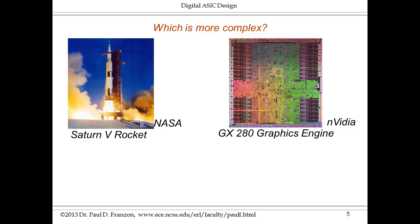How do you measure complexity? Let's try the number of parts in the system. The Saturn V rocket has 350,000 parts. The chip on the right has over a billion parts. Admittedly, there are more unique parts in the Saturn V rocket, but just in terms of component count, the silicon chip is more complex than the Saturn V rocket — and even the entire Saturn V system with the Apollo module and LEM.